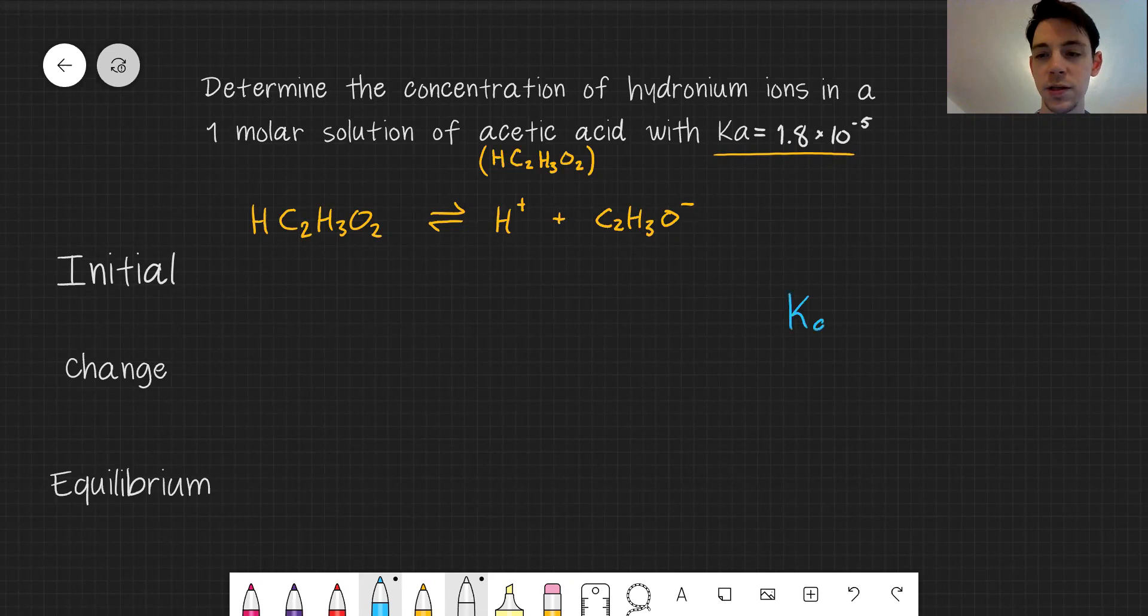Our Ka expression is products over reactants. Products are H+, and acetate.